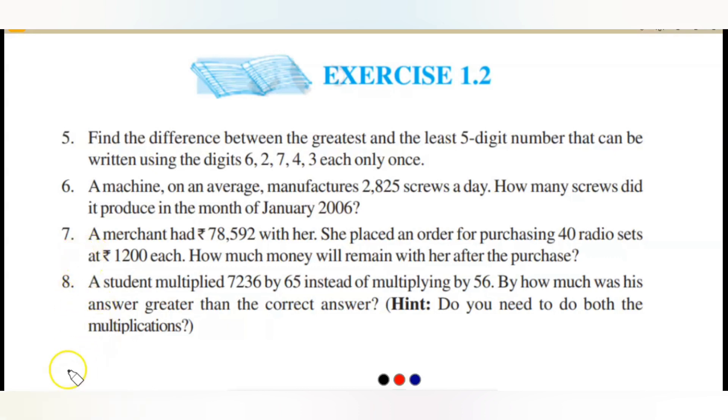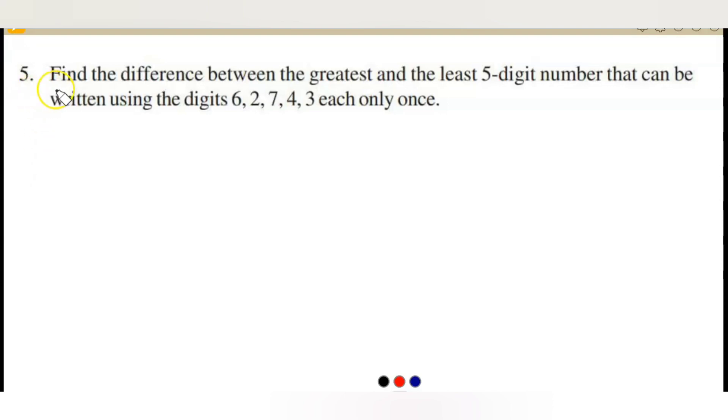Let's start the first word problem, the fifth question. Find the difference between the greatest and the least five digit number that can be written using the digits 6, 2, 7, 4, 3 each only once.